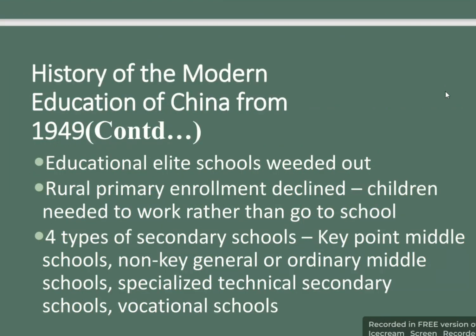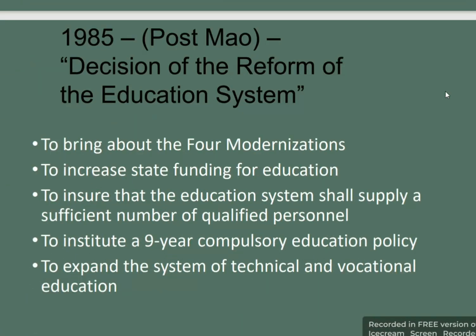Elite schools were weeded out and rural primary enrollment declined as children were needed to work rather than attend school. Four types of secondary schools emerged: key-point middle schools, non-key general or ordinary middle schools, specialized technical secondary schools, and vocational schools. The 1985 post-modernization reform of the education system aimed to bring about four modernizations, increase state funding for education, ensure a sufficient number of qualified personnel, implement a nine-year compulsory education policy, and expand technical and vocational education.